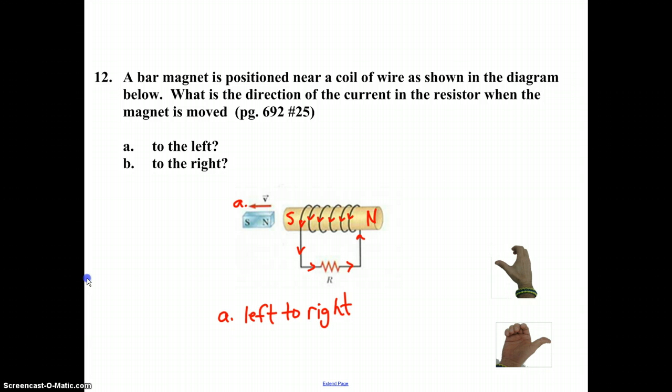In part B, what they do is they now take and move the magnet toward the solenoid. So in B, now we're going to have the magnet approach the solenoid. So in this question, what opposes an approaching north pole?